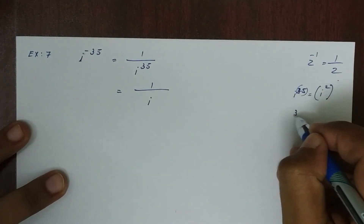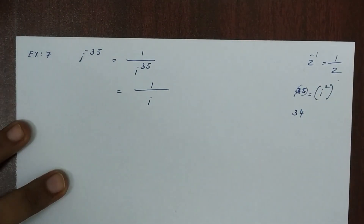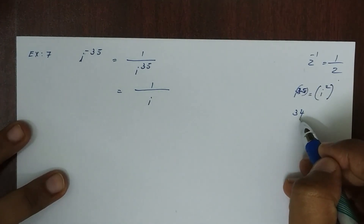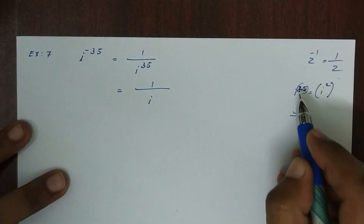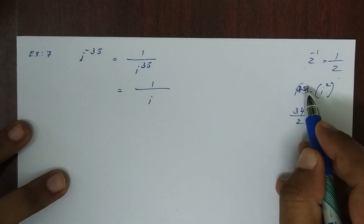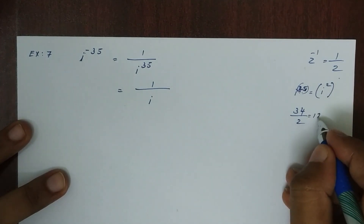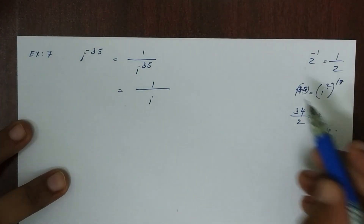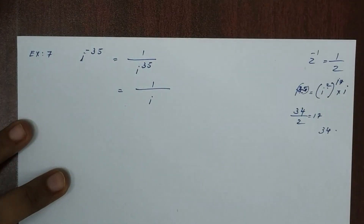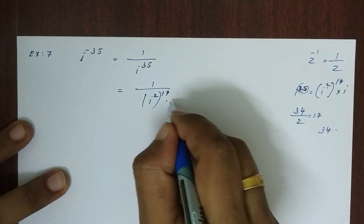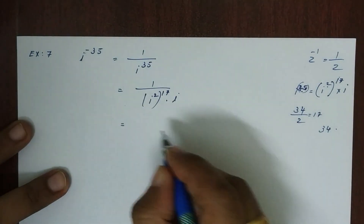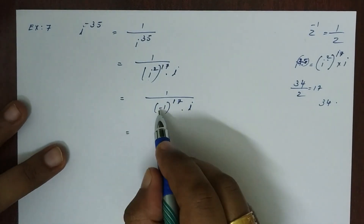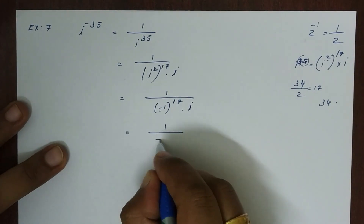So i^(-35) equals 1 divided by (i²)^17 times i. Since i² equals -1, we have (-1)^17 times i in the denominator. (-1)^17 equals -1, so we have 1 divided by (-i). To rationalize, we multiply numerator and denominator by i, giving i divided by -i², and since i² equals -1, this equals i divided by minus(-1), which equals i.